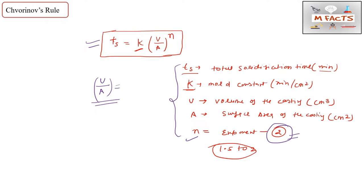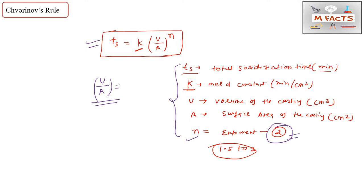Chvorinov's Rule indicates that a casting with a higher volume-to-surface-area ratio will cool and solidify more slowly than one with a lower ratio. After understanding this concept, we will solve a numerical problem on this topic.